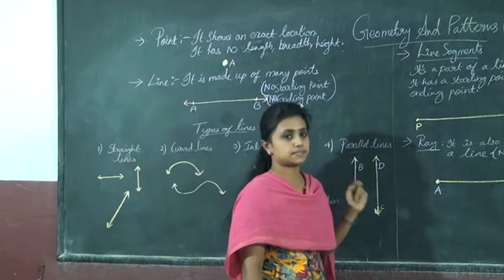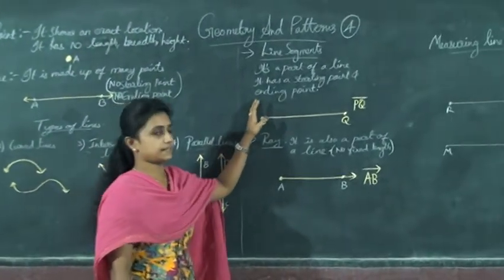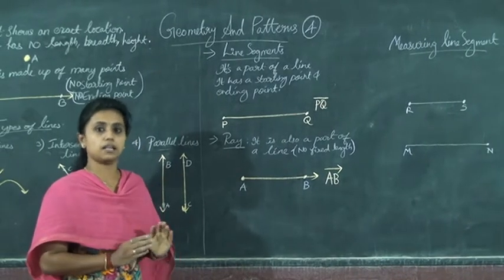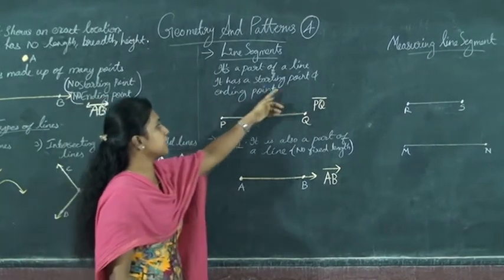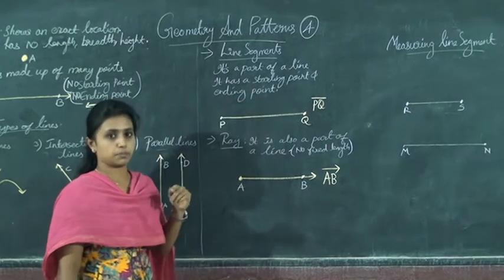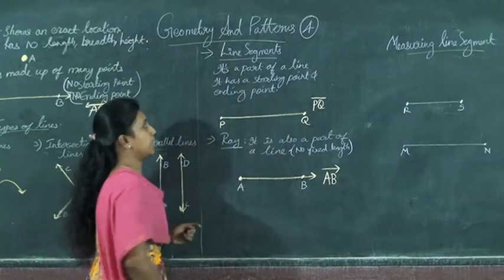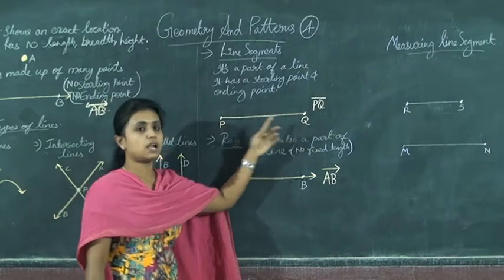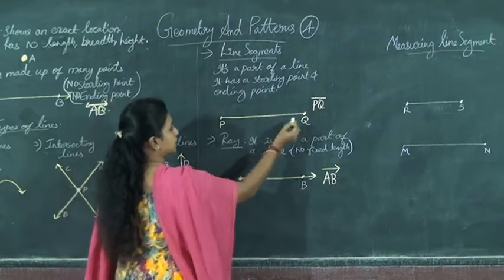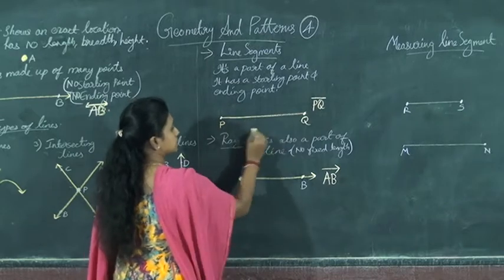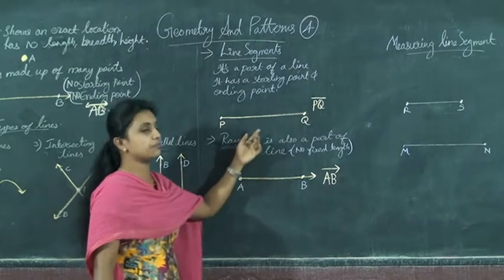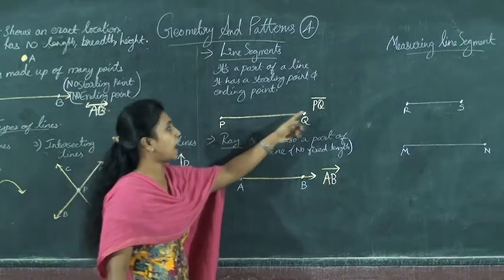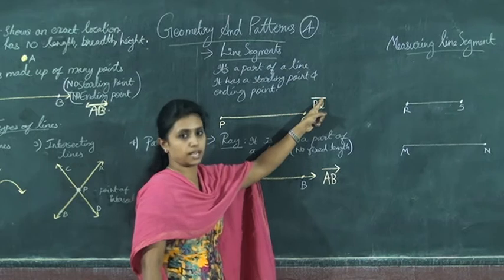Next is Line Segment. What does it mean by a Line Segment? A Line Segment is a part of a line. It has a starting point and an ending point. For example, PQ is a Line Segment. It is of fixed length, so we can measure it. It is represented as PQ with a line on top, with no arrows.